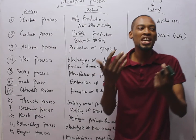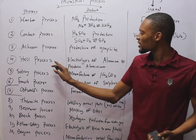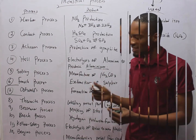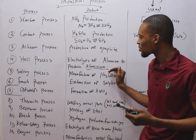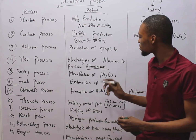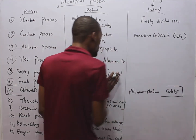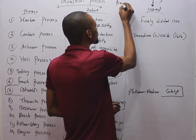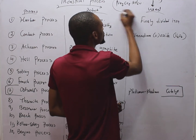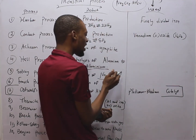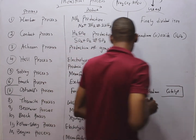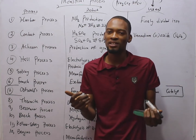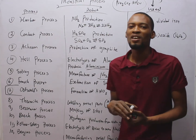The Hall process is used in the production of aluminium, while the Solvay process is used in the production of sodium carbonate. The common name of sodium carbonate is soda ash. When it contains water of crystallization it becomes washing soda — so soda ash is anhydrous and hydrated washing soda. Washing soda is a very important compound of sodium with wide applications.